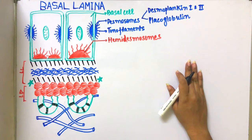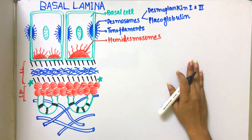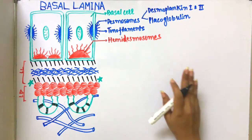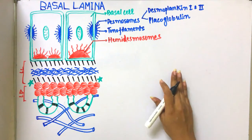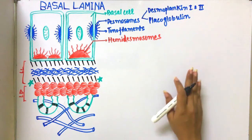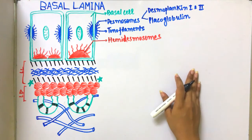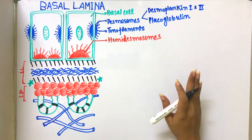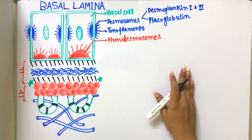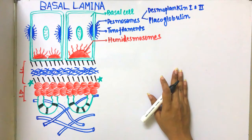The hemidesmosomes measure 20 to 40 nanometers. Now, what is the composition of lamina lucida? It has a glycoprotein layer. After that, it has type 4 collagen. It also contains antigen-bound antibody KF1, and it contains bullous pemphigoid antigen, and large triple chain molecules which are the laminins.